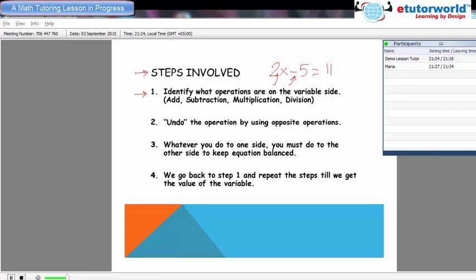Now the next step says undo the operation by using the opposite operation to make this quantity zero. So the opposite of subtraction is addition. So I add 5 here equals to 11. Now we look at the third step: whatever you do to one side of the equation, you must do to the other side to keep it balanced. That means I add 5 to the other side as well.